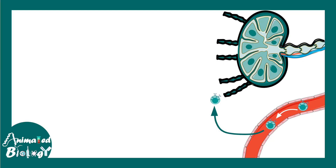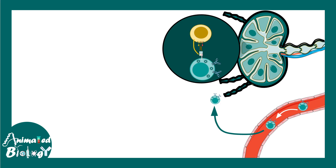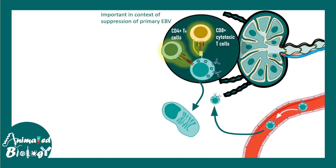The virus can travel to the lymph nodes, which are the major stations for B cells and T cells. In the lymph node, B cells can interact with CD8-positive T cells, which can recognize viral peptides and mount an immune response against them. This is important for suppression of the primary EBV infection, and via cross-presentation, CD4-positive T helper cells can also get activated.